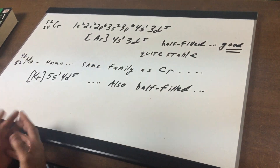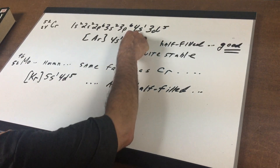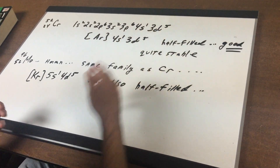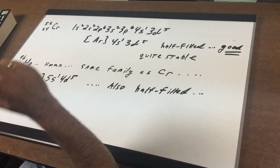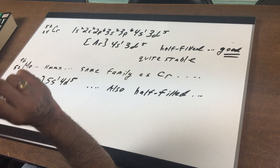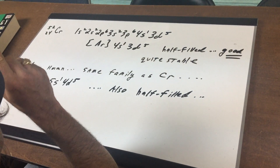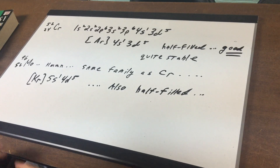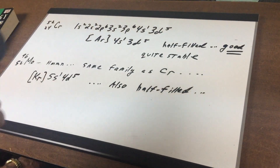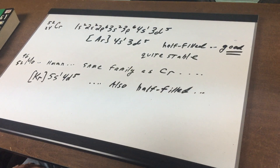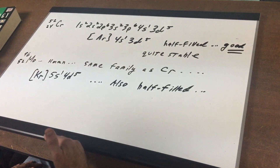So you never want to forget that chromium has six unpaired electrons — one in the 4S1 and each of the D orbitals has an unpaired electron. Now get out a periodic table and we're going to make a reach. If you go right underneath chromium, you've got molybdenum. I'm not saying this is going to work all the time, but it works wonderfully here. Very often if there's an anomaly in one member of the family, it's often seen in another.